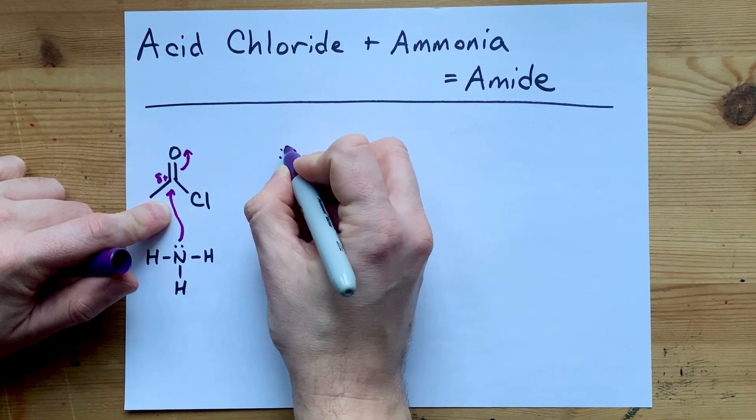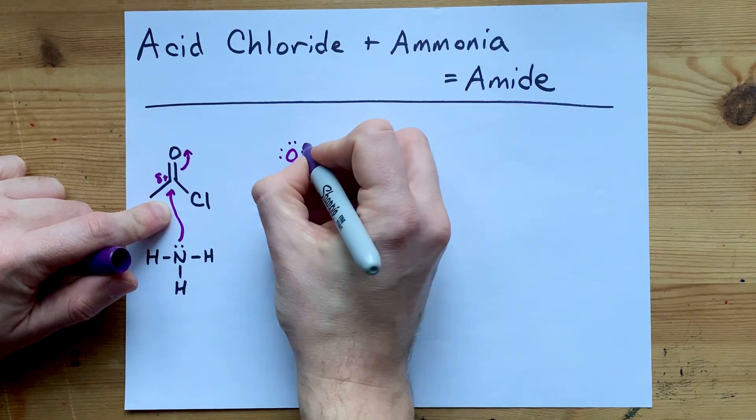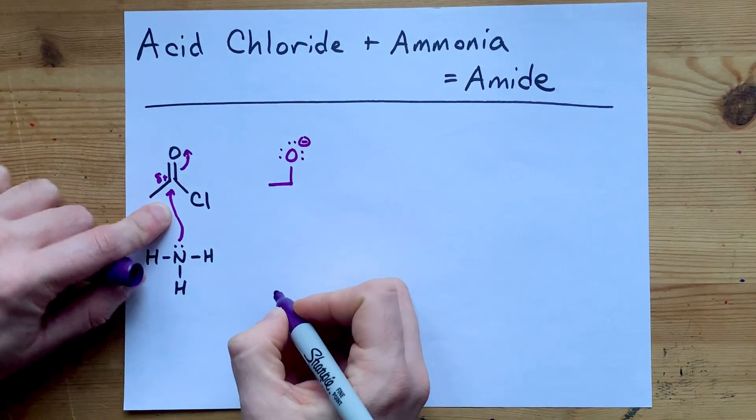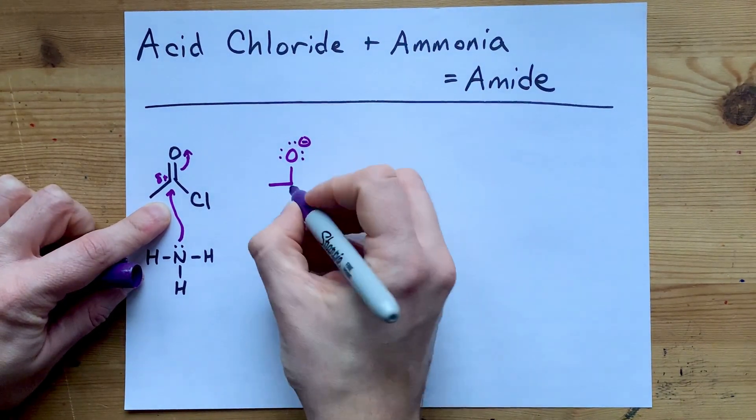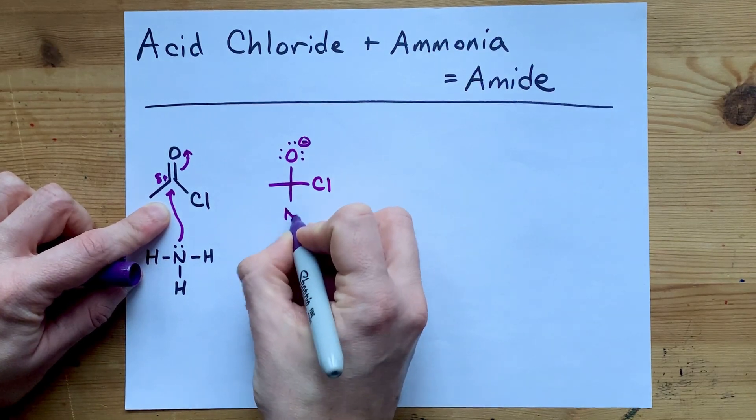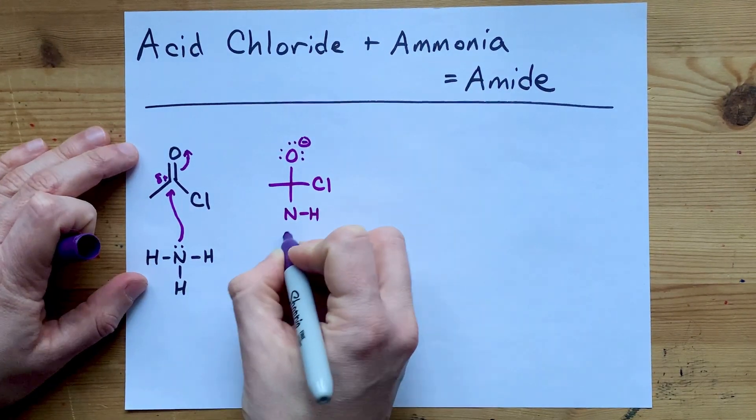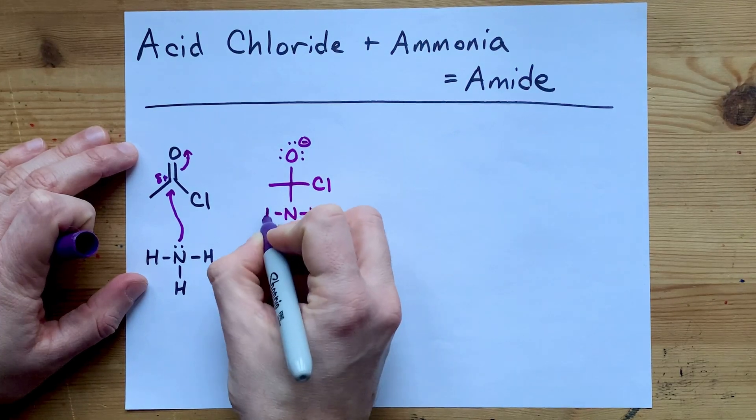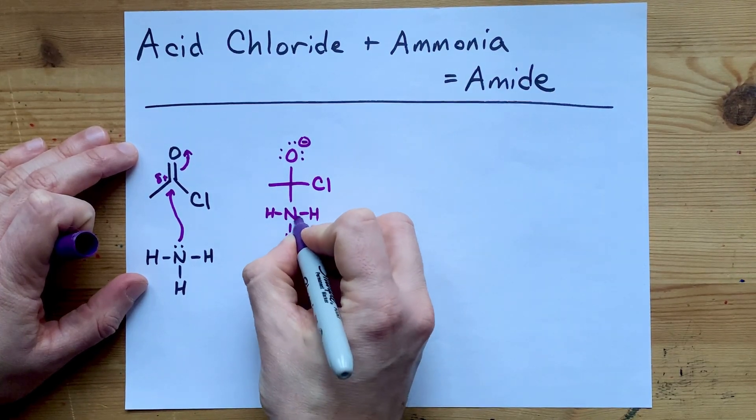You end up with that oxygen single bonded to the carbon. It now has a formal charge of minus one. You still have the chlorine attached, and you are now attached to nitrogen. That nitrogen itself is attached to its three hydrogens. It has a formal charge of plus one.